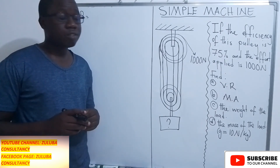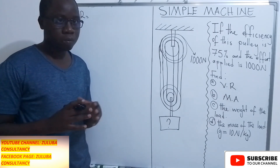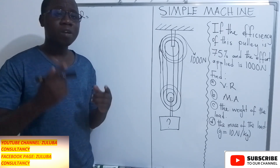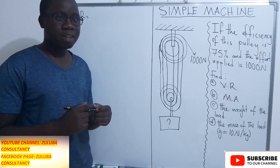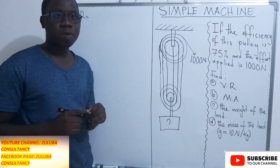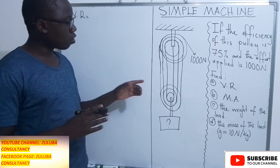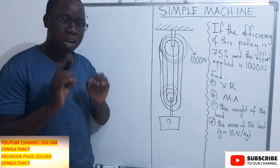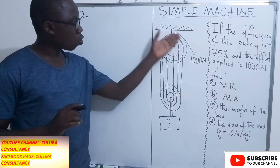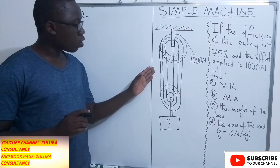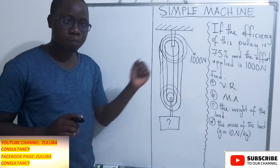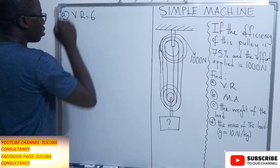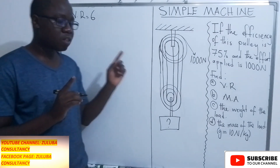The first question is asking us to find the velocity ratio. Now for a pulley system, the velocity ratio is found by simply counting the number of lines that are connected to the moving pulley. So in this case, we have 1, 2, 3, 4, 5, 6 lines that are connected to this moving pulley. So because we have 6 lines, the velocity ratio is 6.